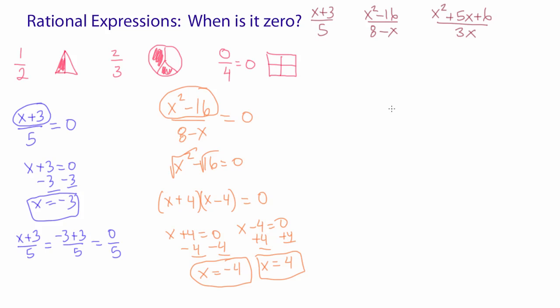Then the next case will be x squared plus 5x plus 6 over 3x. When is that equal to zero?